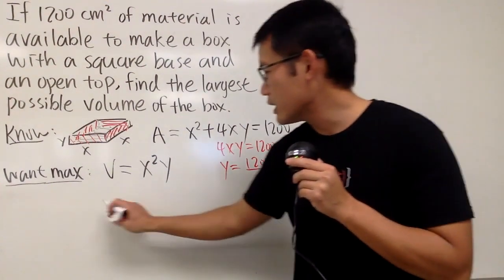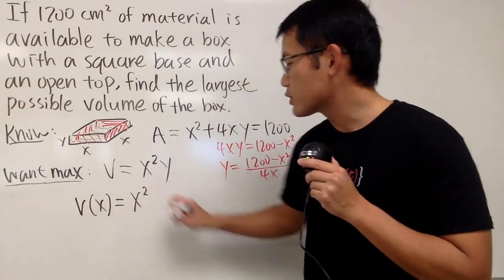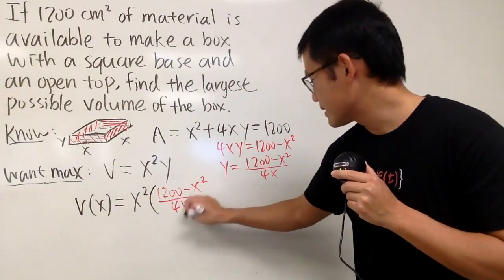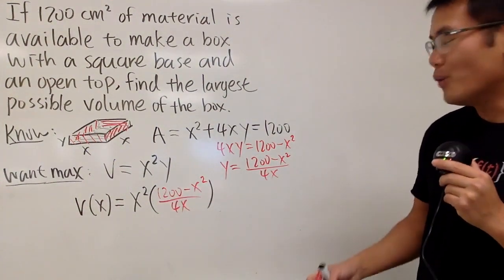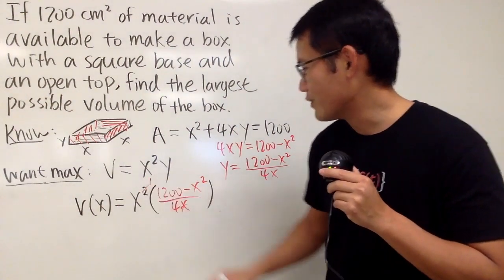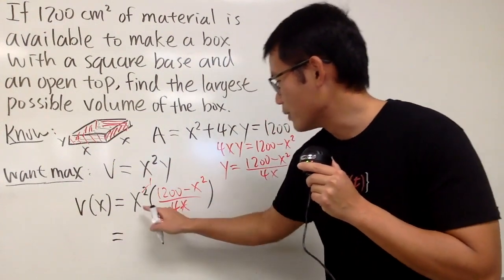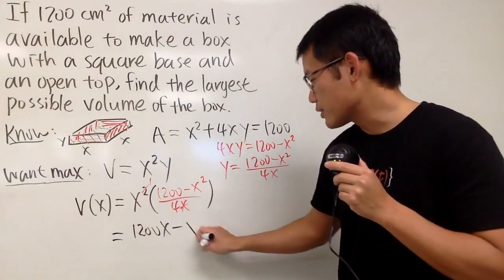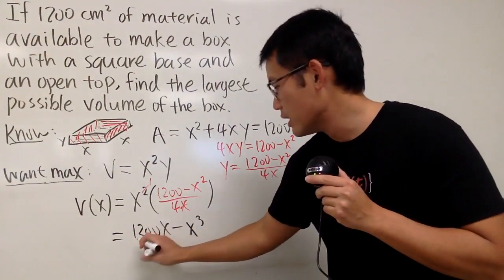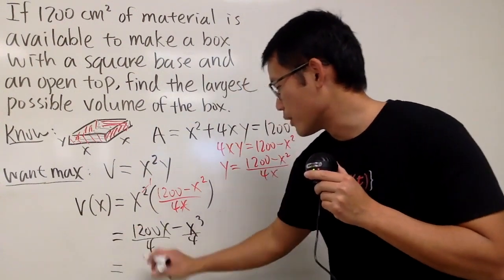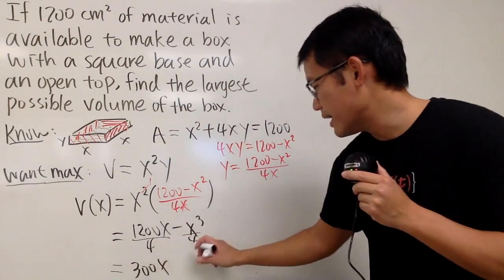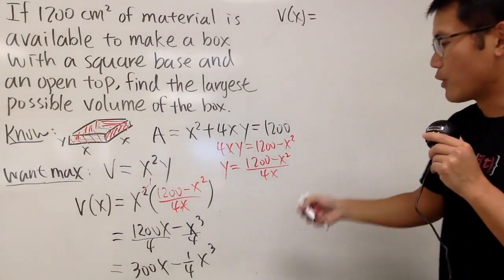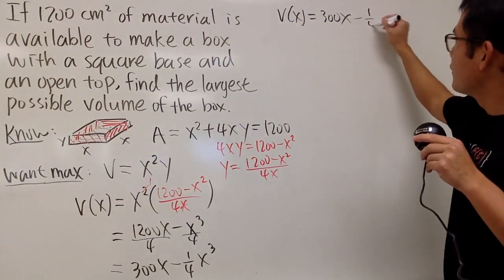So we'll put this right here, so we can get the volume in terms of just x. And that's going to be x squared, and then for the y, it's just this, which is 1,200 minus x squared divided by 4x. And can we do more? Of course. First of all, we can cancel, and this is still one of them. And then we can distribute. So we get the volume is 1,200 times x, and then minus x squared times x, which is x cubed, over 4. So let me just write this over 4 here, and then over 4 here. So that means here the volume is 300, after you reduce x. And then this is minus 1 over 4x cubed, like that. So let's go ahead. Here is our function. The volume is 300x minus 1 over 4x cubed.